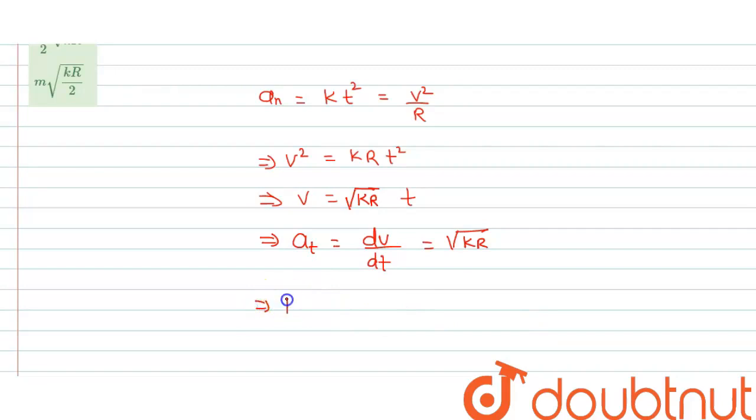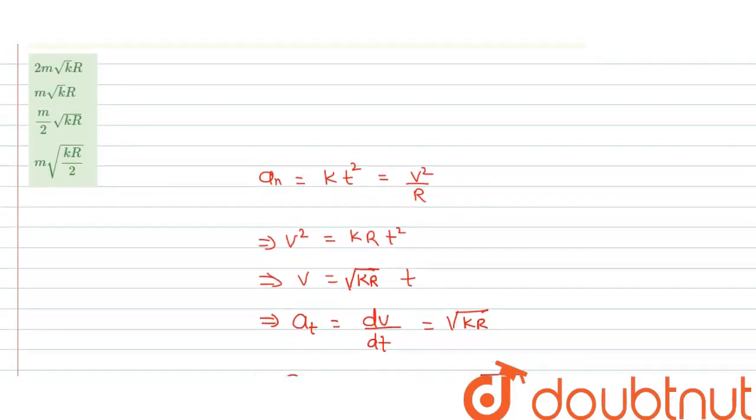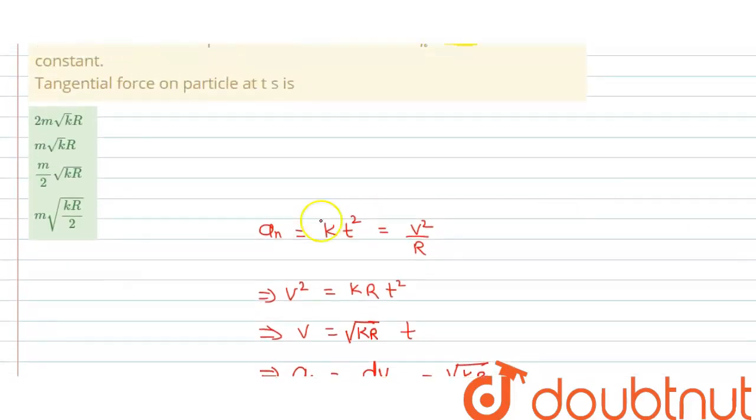If we want to calculate now tangential force, so tangential force will be equals to mass into tangential acceleration. So this equals m into tangential acceleration, which is √(kr). So final answer is m√(kr), so second option is the correct option. So I hope you have understood this explanation. Thank you.